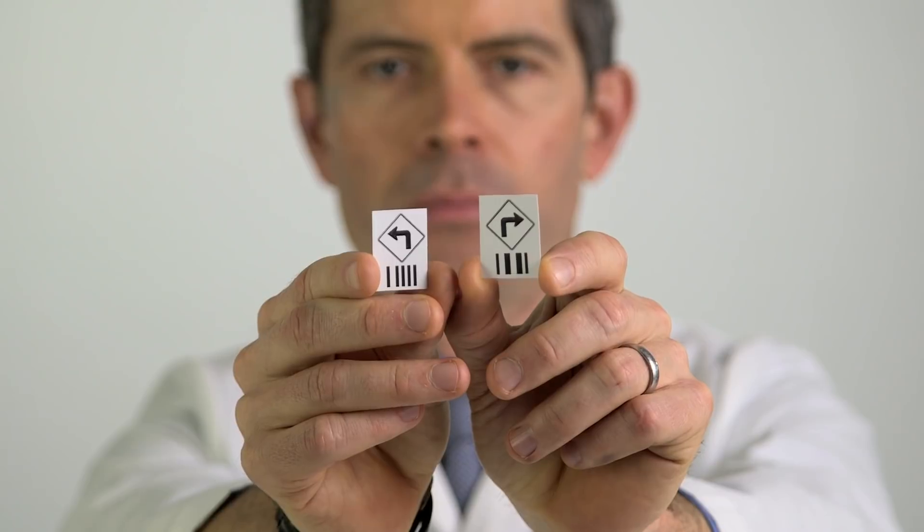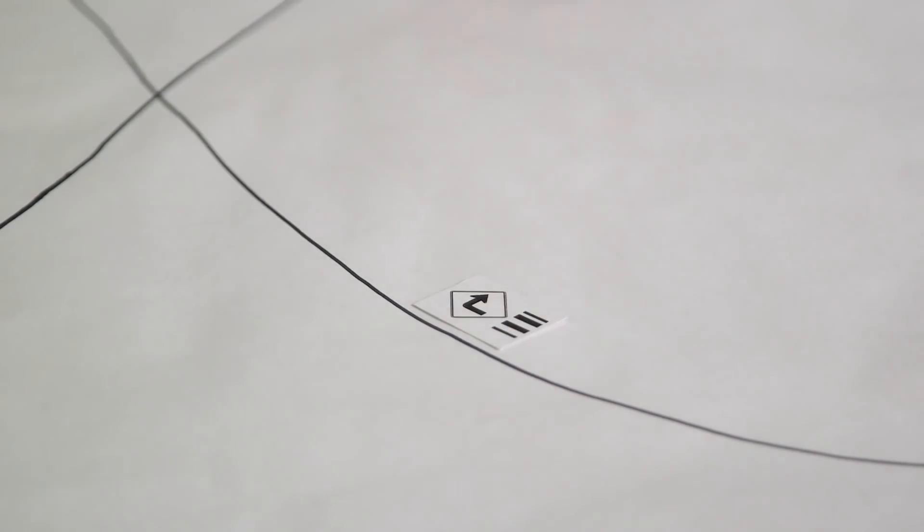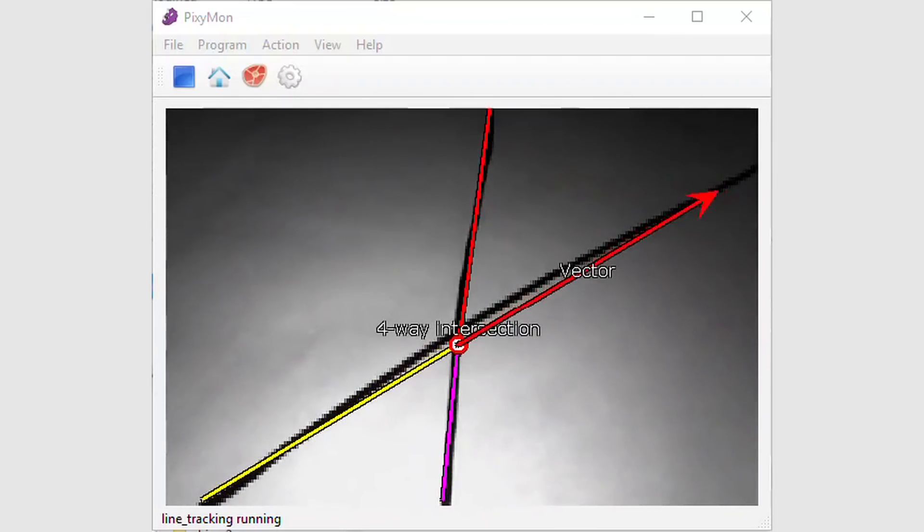Pixie 2 can also identify little signs and report them to your program. The signs can tell your robot what it should do.